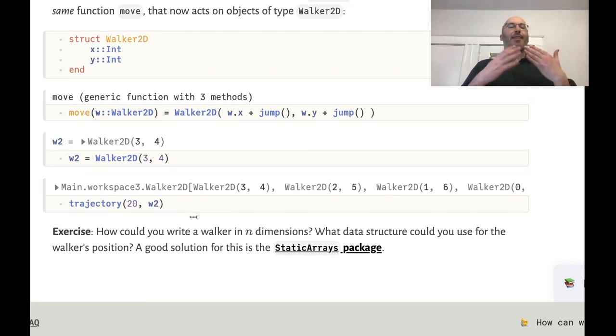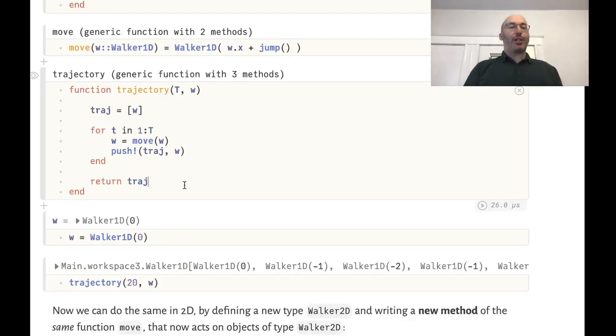So to summarize we've seen that Julia enables generic programming very nicely. We can write functions like this trajectory function which are completely generic. This refers to any object w as long as that object knows how to move. In other words if there's a version of the function move defined on that object w.